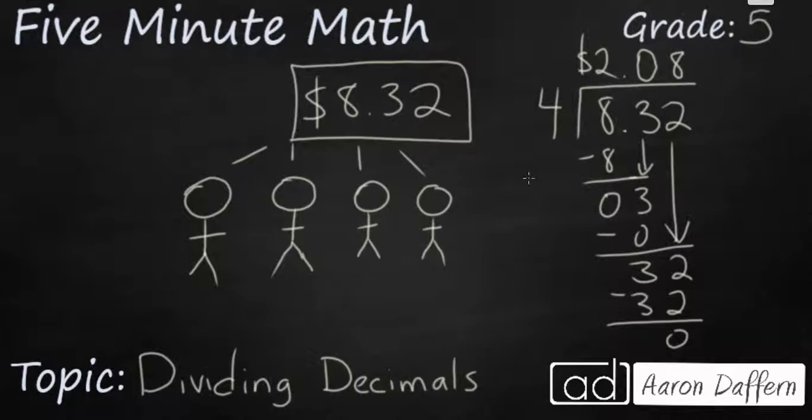And just to double check, we can go ahead and multiply that inverse operation. 2.08 times 4, let's make sure that ends up as 8.32. 4 times 0 is 0. 4 times 3 is 12, and you've got an 8, and since you had two digits behind the decimal in the factor, you've got two digits behind the decimal in your product. And that is our answer, 8.32. So, $2.08 is what each of these students are going to get.